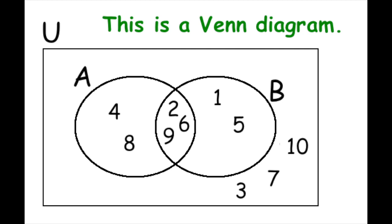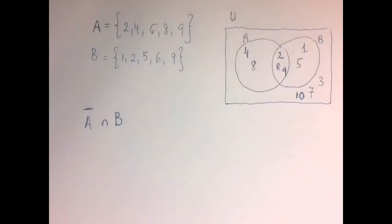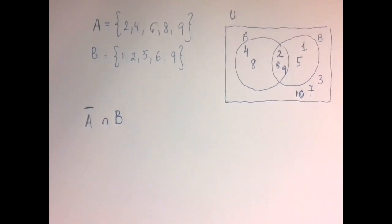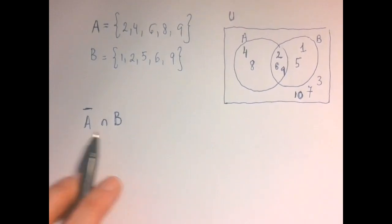This Venn diagram is not necessary here, but we're going to see that they are very, very useful. So the first set that we need to find is the intersection of the complement of A and B. First, we have to find the complement of A and then intersect that with B.